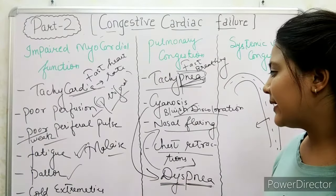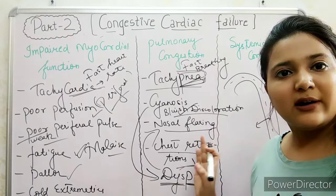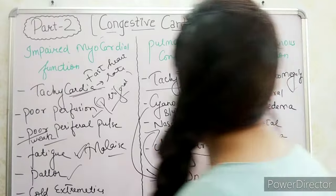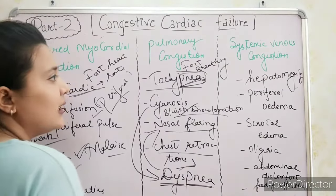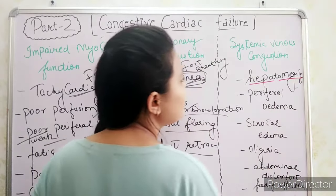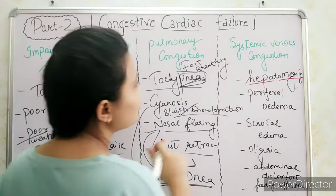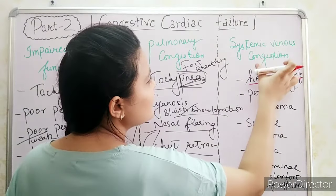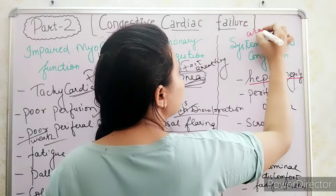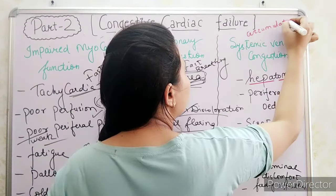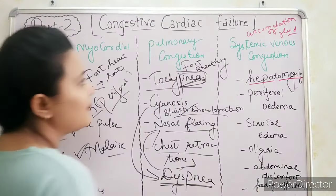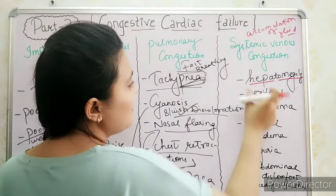Next is chest retractions — the chest will retract. All these clinical features are interconnected. Now for systemic venous congestion features: first is hepatomegaly. 'Hepato' is used for liver, and 'megaly' means increase in size. So the liver size will increase because of systemic venous congestion — there will be accumulation of venous blood and fluid.